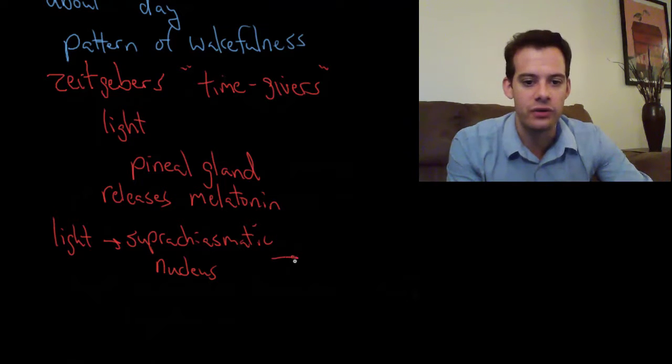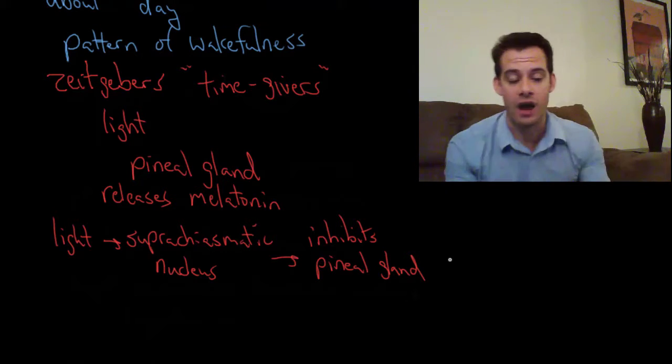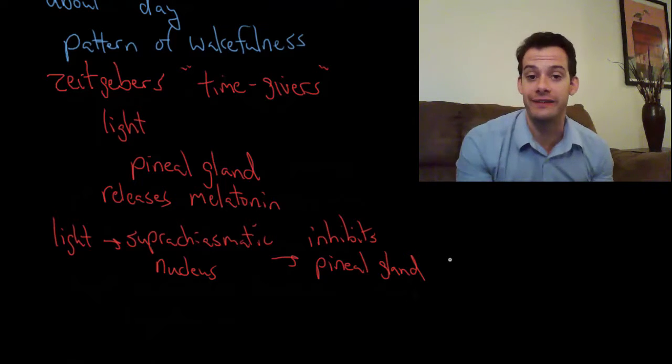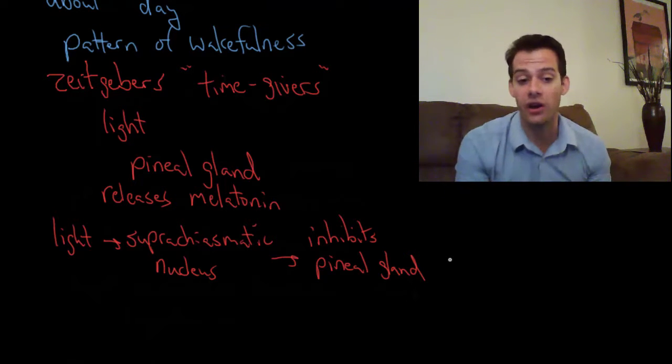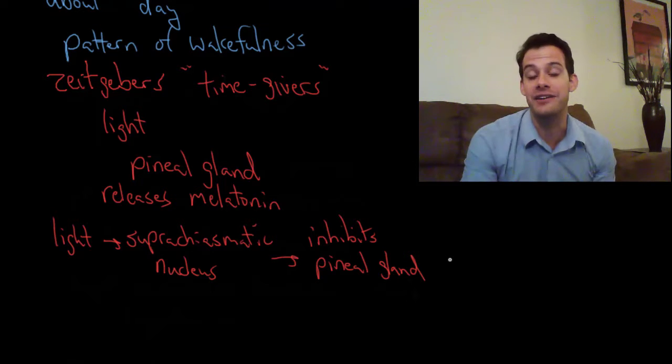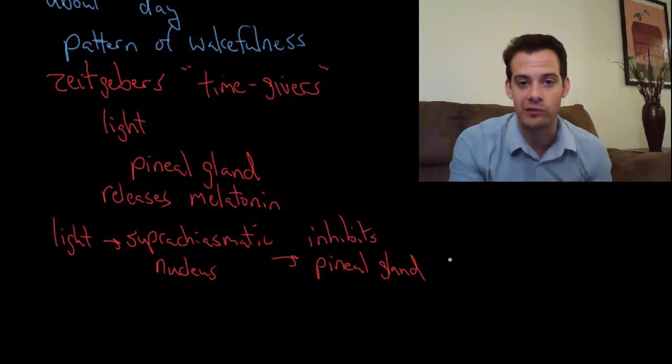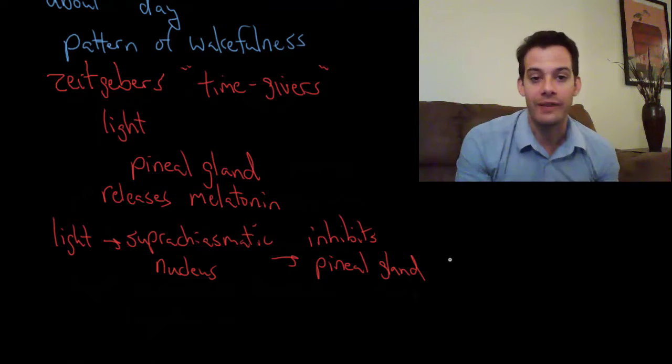And what the suprachiasmatic nucleus does is it inhibits the pineal gland. So it stops the release of melatonin. So when light is present you stop releasing melatonin and so you don't feel as drowsy. When it's dark then the pineal gland is more active, it's releasing more melatonin and you start feeling more drowsy.